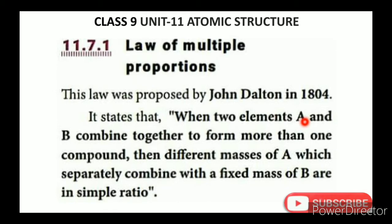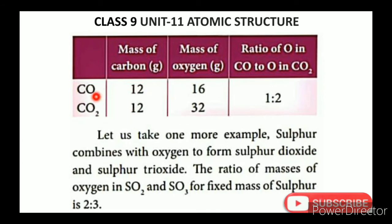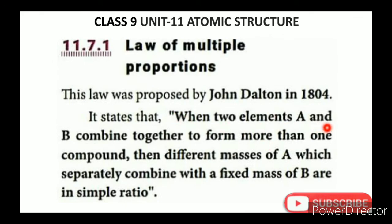For example, let A be oxygen and B be carbon. Carbon is fixed at 12 grams. In carbon monoxide, the oxygen is 16 grams; in carbon dioxide, the oxygen is 32 grams. The ratio of oxygen in carbon monoxide to carbon dioxide, for a fixed mass of carbon, is 1 is to 2 — a simple ratio.